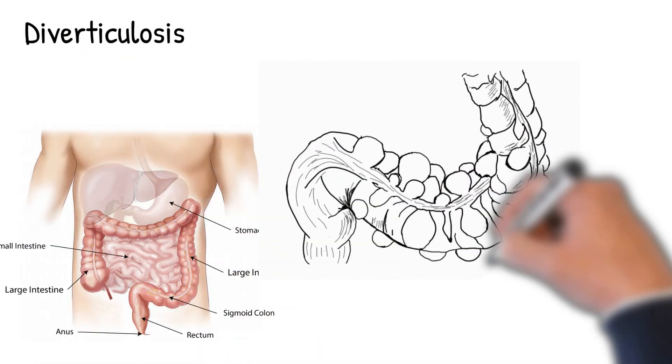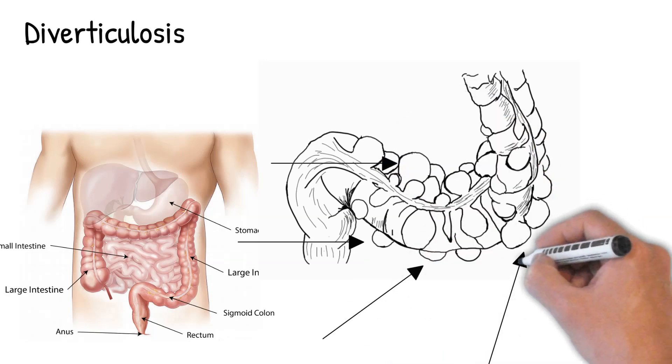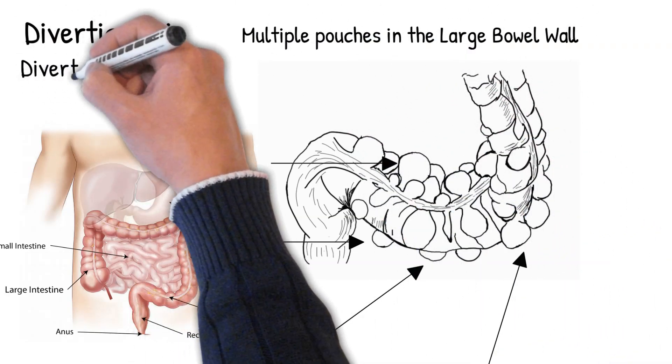Diverticulosis is a condition of herniations of mucosa and submucosa through areas of weakness in the muscular layer in the large bowel wall. To say more simply, multiple pouches in the colon.